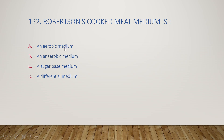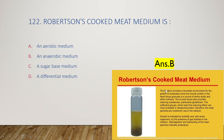Next question: Robertson's cooked meat medium is an aerobic medium, anaerobic medium, sugar-based medium, or differential medium? The right answer is option B, it is an anaerobic medium. Robertson's cooked meat medium provides a favorable environment for the growth of anaerobes.